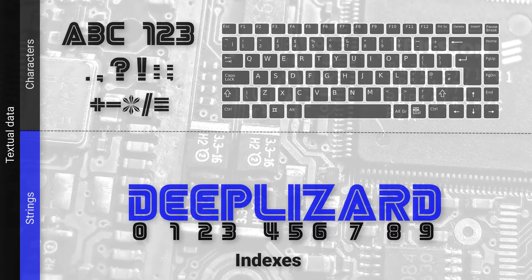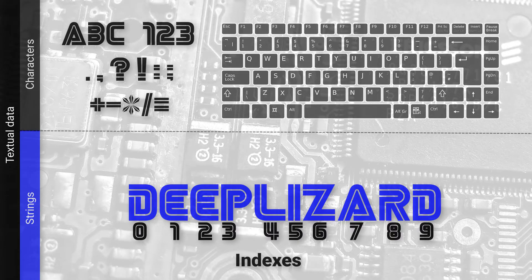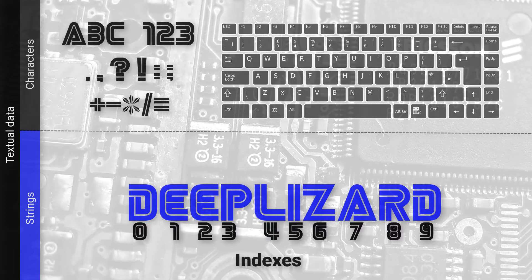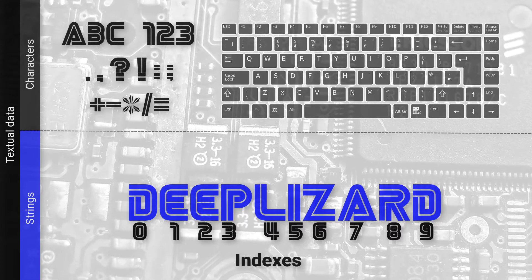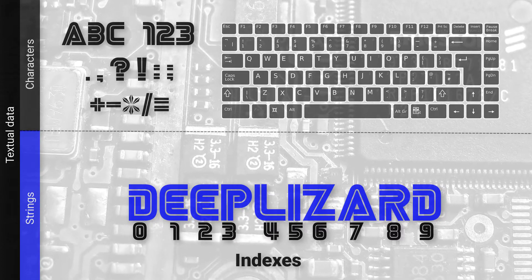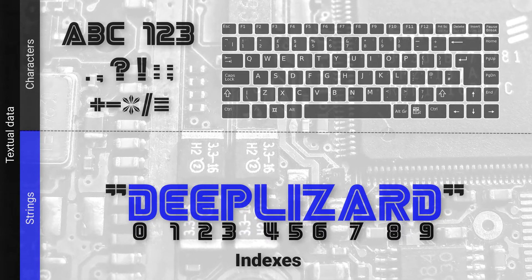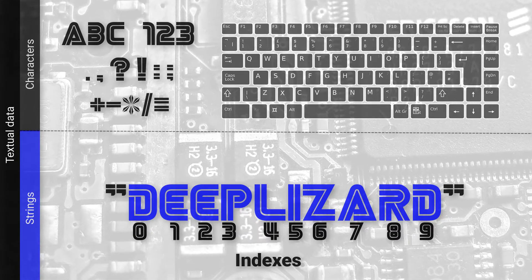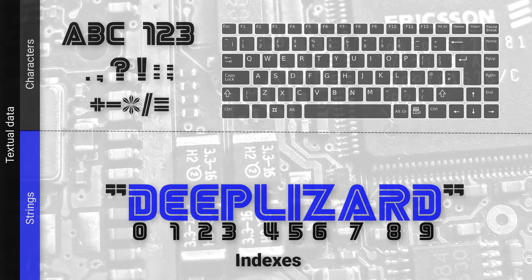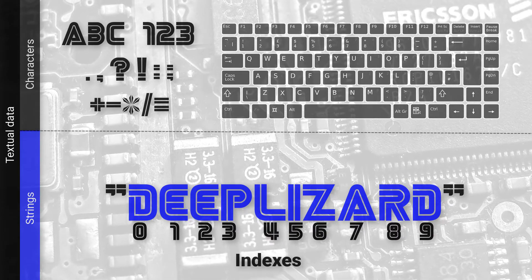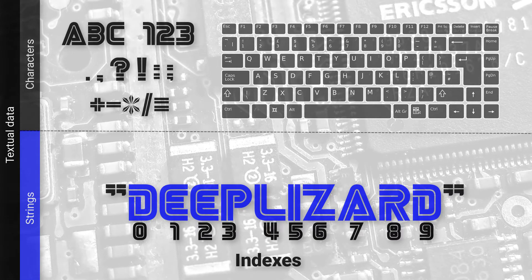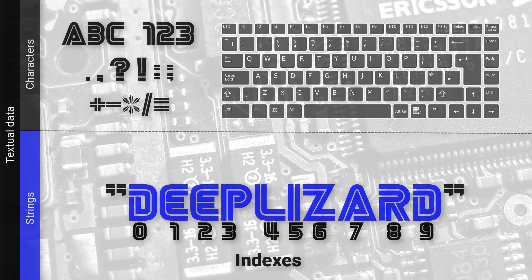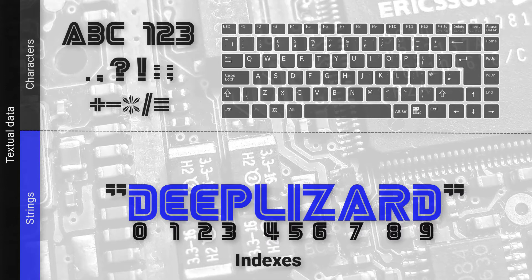We've now built on the concept of reference and data value, knowing that 'deep lizard' is called a string. When working with strings as data values, we always put strings in double quotes to indicate that the actual data value is a string. Sometimes single quotes are used as an alternative, but the key point is that quotes allow the computer to make the distinction between the reference and the actual data value.